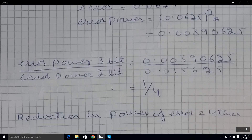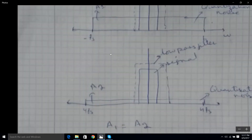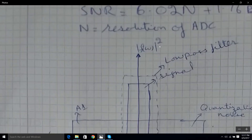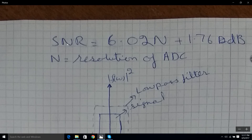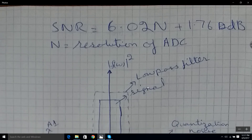For general information, the signal-to-noise ratio is 6.02n + 1.76 dB. The 6.02 also represents the lowering of noise by a factor of 4 per bit. Now let's move on to oversampling.